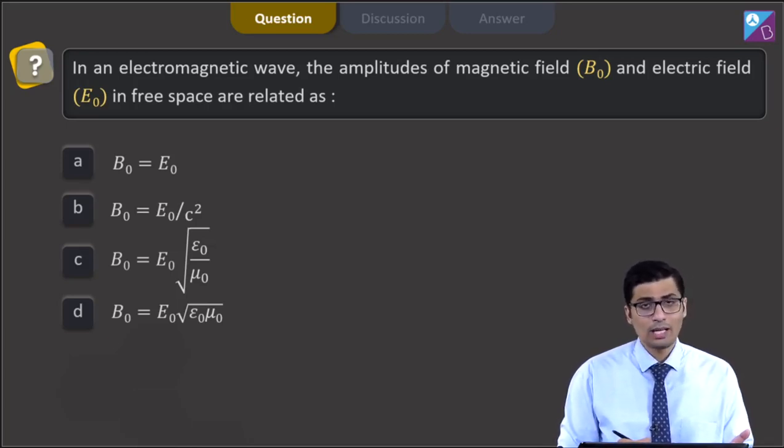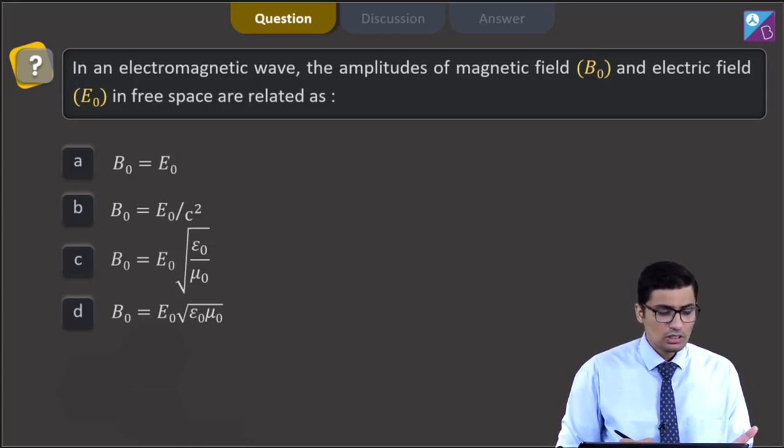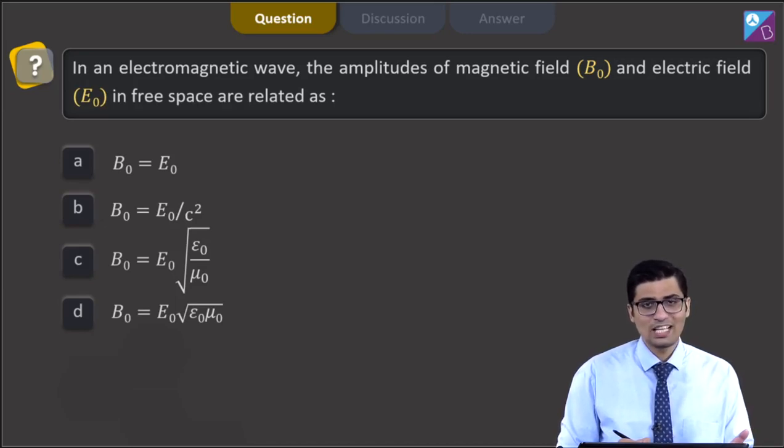B0 is equal to E0 root epsilon 0 by mu0 (epsilon 0 here is the permittivity of vacuum and mu0 is the permeability of the vacuum), or B0 is equal to E0 root epsilon 0 mu0.